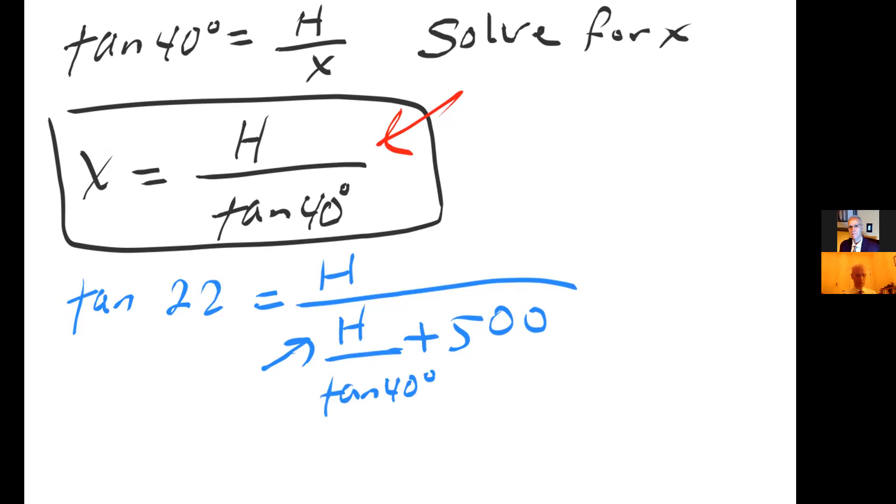Now I'm going to try to solve for H. It's easiest for me to go ahead and cross multiply. So on the left hand side, I have tangent of 22 over 1, and I'm going to cross multiply.